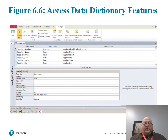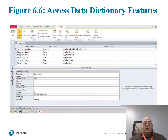This is an example of a data dictionary in Microsoft Access. You'll notice we have field names, the type of data — whether it's number or text. Some database management systems let you have a VARCHAR, which is a variable character accepting numbers and text. And we describe what the attribute is.